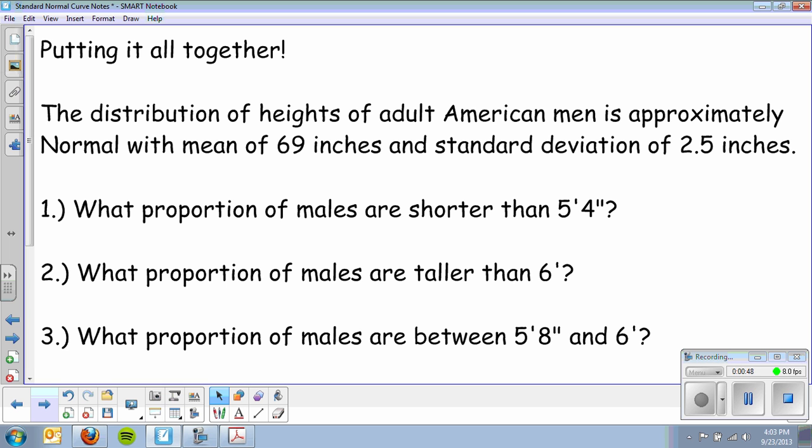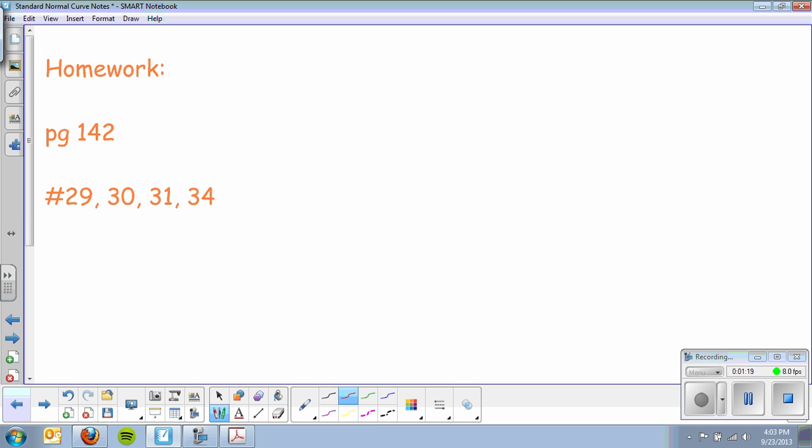Here is an example, we'll do one and that should be pretty much good to go. The distribution of heights of adult American men is approximately normal with a mean of 69 inches and a standard deviation of 2.5 inches. Now I have some questions here. What proportion of males are shorter than 5 foot 4? Now 5 foot 4 doesn't help me because the mean and standard deviation are in just inches, so I'm going to first turn this to 64 inches. Now I go through my four-step problem.